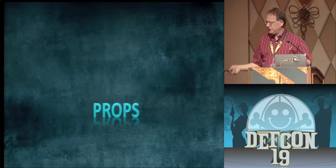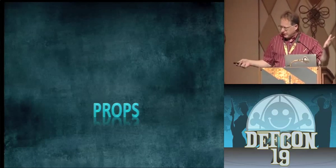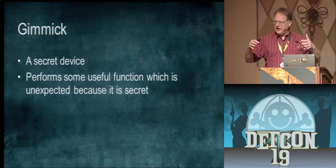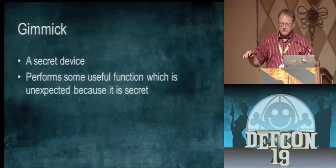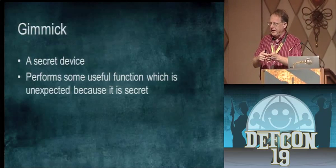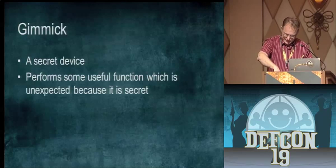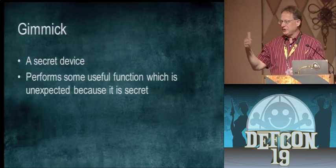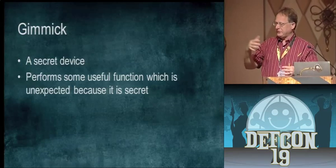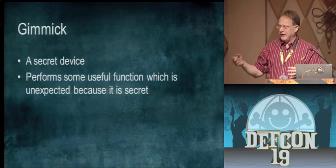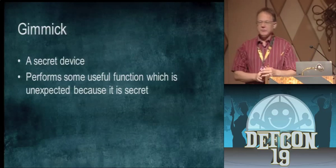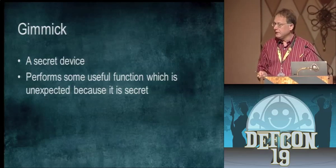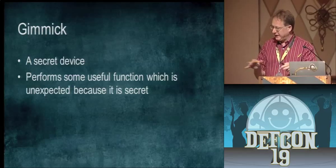Now, props — the objects magicians use. Some are just regular objects, but there are special objects too. First, there's the gimmick: a secret device you don't see, but it has a secret function. For instance, if I had a sticky piece of tape right here, I could put this pencil here and have it stay in my hand. There's also a type of gimmick where you use something that has a secret function — like what I did with my finger. The equivalent in hacking of the gimmick is the rootkit: it's hidden, you can't find it easily, but it has a secret function.